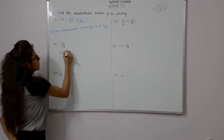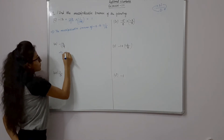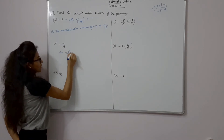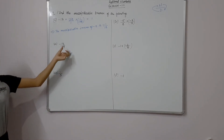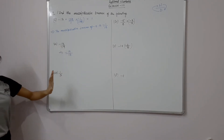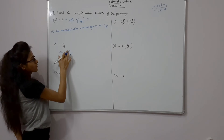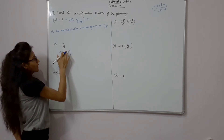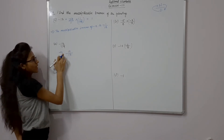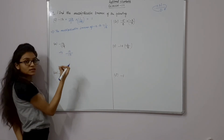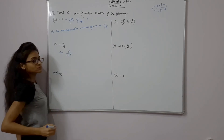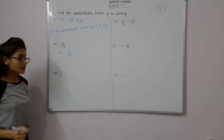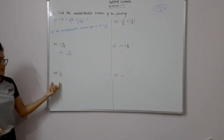Now second part is minus 13 upon 19. So its multiplicative inverse will be minus 19 upon 13. The minus sign can be placed on top or bottom — it doesn't matter — but if your teacher says to keep it with the original term, then keep it there.